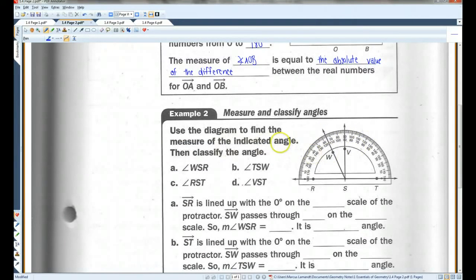Example two, use the diagram to find the measure of the indicated angle, then classify the angle. Angle WSR would be this angle here. Angle WSR is lined up with zero on the outer scale of the protractor. SW passes through 65 degrees on the outer scale. So the measure of angle WSR is 65 degrees. It's between zero and 90 degrees, so it is an acute angle.